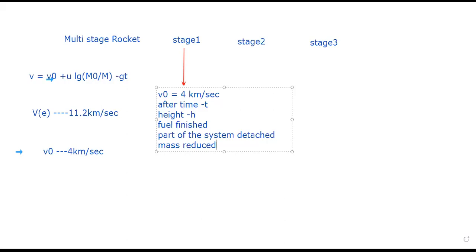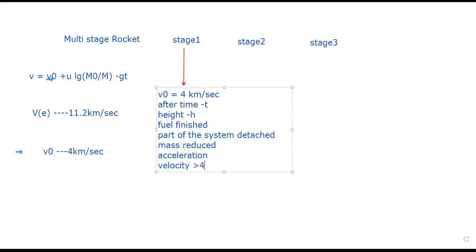The rocket has three stages with three separate compartments. In the first stage, when the total fuel in the first compartment is burnt, it is detached from the rocket. The mass of the rocket is reduced after reaching that height. With the reduced mass, acceleration is given to the rocket and it moves with a velocity greater than 4 km/s.